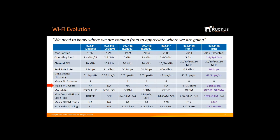11ac allows the AP to talk to four devices at the same time. 11ax extends this to eight devices. With 11ac, multi-user MIMO was only supported in the download direction, but with 11ax you can do multi-user MIMO in both upload and downlink directions.